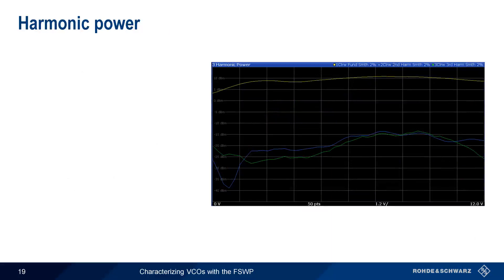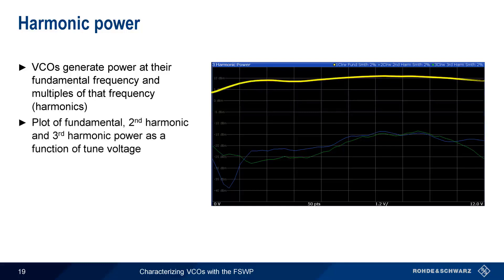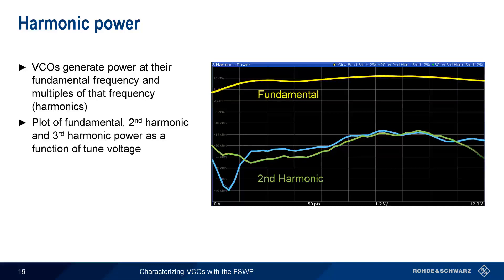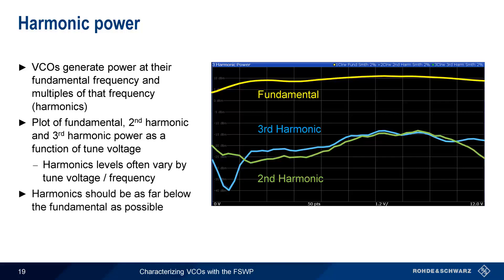Like most other signal sources, VCOs generate power not just at their nominal or fundamental frequency, but also at multiples of that frequency — these signals are referred to as harmonics. The harmonic power measurement plots the power of the fundamental, the second harmonic, and the third harmonic as a function of the tuned voltage. Output power usually varies with tuned voltage or frequency, and this is true for harmonics as well. In almost all cases, harmonics are undesirable and therefore should be as far below the fundamental as possible — usually tens of dB in most modern VCOs.